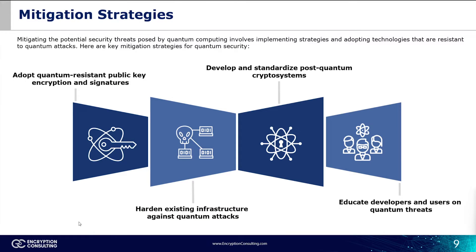Now that we've discussed the challenges facing us with the rise of quantum computing, how do we mitigate those threats? We need to implement strategies and adopt technologies resistant to quantum attacks. Mitigation strategies include: adopting quantum-resistant public key encryption and signatures as early as possible for a first-mover advantage; hardening existing infrastructure against quantum attacks; developing and standardizing post-quantum cryptosystems. But most importantly, awareness and education are key — educating developers and users on quantum threats can prevent many cybersecurity vulnerabilities.